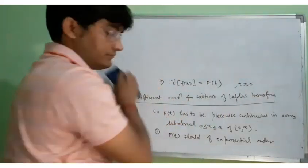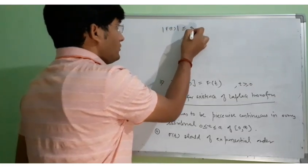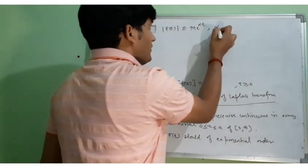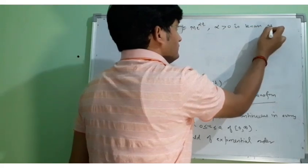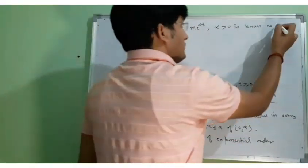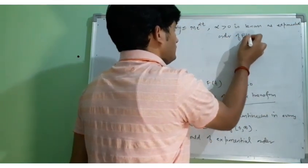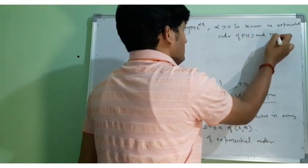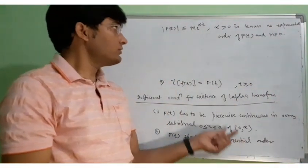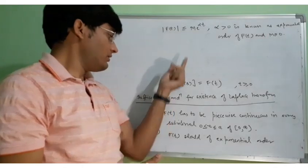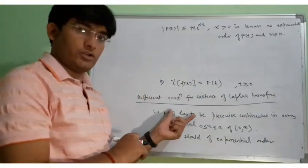The function has to be of exponential order. That means the modulus of F(t) should be less than or equal to m times e to the power alpha t, where alpha is some positive quantity and m is another positive constant. If these two conditions hold, then we will say that the Laplace of F(t) will surely converge. But remember, these are sufficient conditions, not necessary conditions.